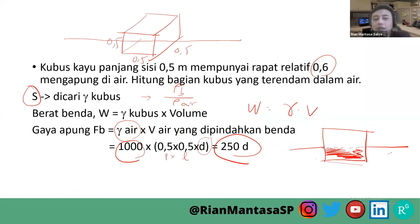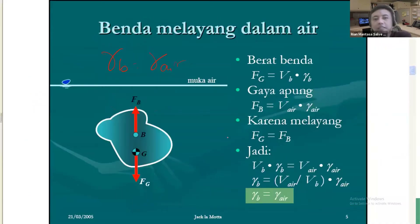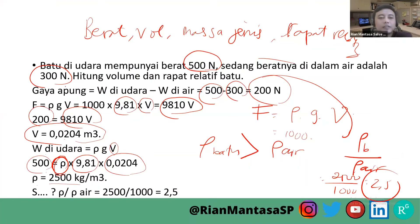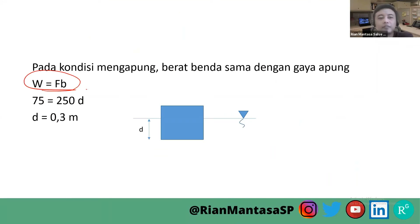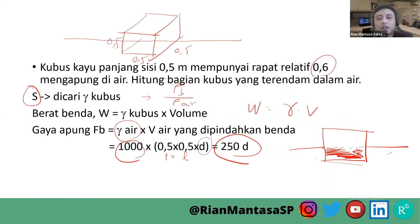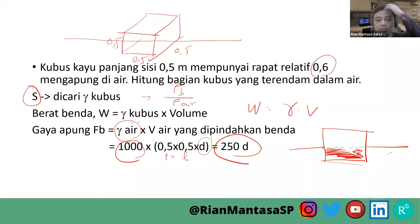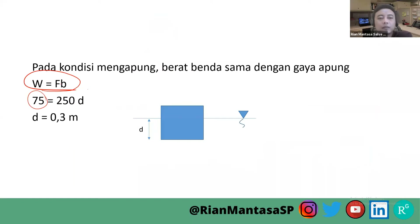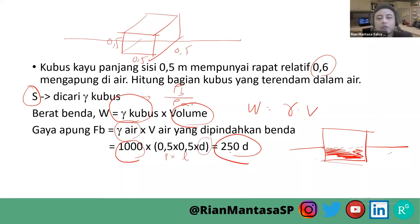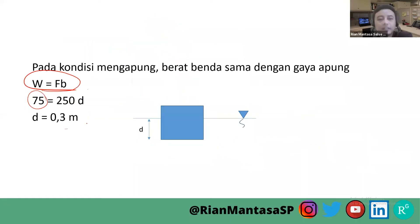Kalau kondisi mengapung, berat yang terjadi pada benda itu sama dengan gaya yang terjadi pada air. Berarti syaratnya adalah W harus sama dengan FB. Sehingga W-nya ini 75 N. Berat bendanya itu ketika dianalisis menggunakan gamma kubus dikalikan volume hasilnya 75. Kemudian FB-nya adalah 250 × D. Dari 1000 × 0,5 × 0,5 sama dengan 250. Hasilnya adalah D = 0,3 meter. Jadi bagian yang terendam oleh air adalah sebesar 0,3 meter dari 0,5, berarti sisa 0,2 meter di atas.